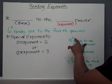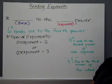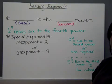For example, 9 with an exponent of 2, you could read it as 9 to the 2nd power or simply 9 squared.